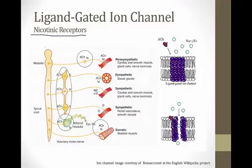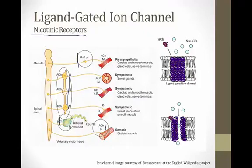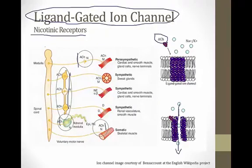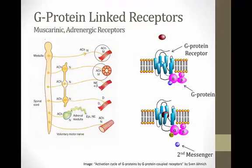Nicotinic receptors are found at the first synapse of the parasympathetic system, the first synapse of the sympathetic system, the adrenal medulla, and in somatic skeletal muscle. They respond through ligand-gated ion channels — proteins that, when triggered by acetylcholine, open to allow ions (usually sodium or potassium, sometimes chloride or calcium) to pass through, triggering the response in the skeletal muscle or neuron on the other side.